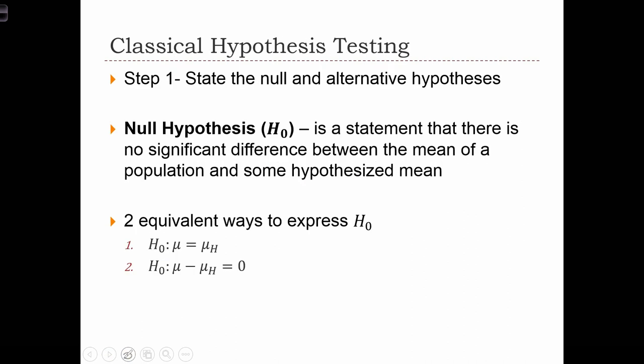So we're going to start off our discussion with stating the null and alternative hypotheses. The null hypothesis, which is denoted H sub 0, 0 for null, is a statement that there is no significant difference between the mean of a population and some hypothesized mean. So typically we express the null hypothesis in this way, but sometimes you'll see it in this equivalent second way.